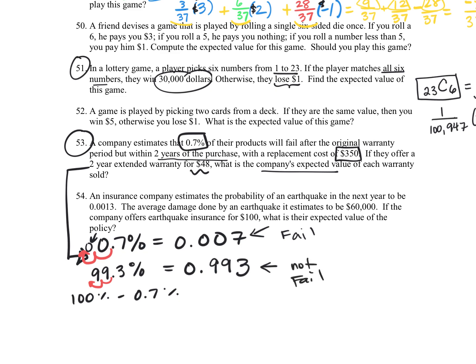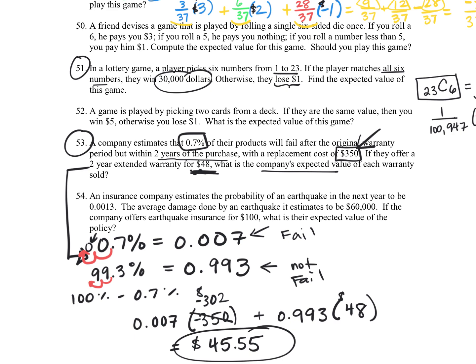For our expected value, we're going to take the probability that we fail times what that costs. Well, it costs the company $350, but they did get $48 from them. So their only loss is going to be $302. And then for the not failing, they are going to gain $48 for every one of those. This ends up to be $45.55 if you enter that into your calculator. So the company's expected value of each warranty is actually $45.55, which is a nice positive number so the company is gaining some money.